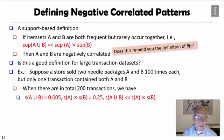But then you look at support of A, which is 100 over 200 transactions. So it's 0.5. Same as support of B. So their product should be 0.25. So this number is far bigger than this. That means support of A and B getting together is far less than support of A times support of B. So we can easily say A and B are negatively correlated. They are negatively correlated patterns.